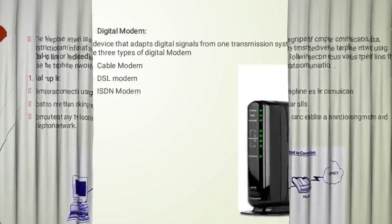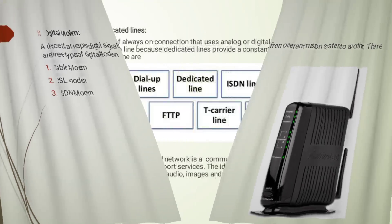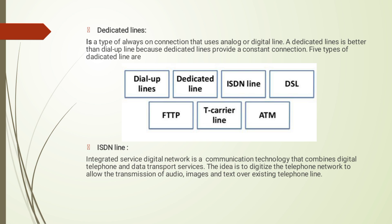A digital modem is a device that adapts a digital signal from one transmission system to another. There are three types of digital modem: cable modem, DSL modem, and ISDN modem. A dedicated line is a type of always-on connection that uses analog or digital lines. It is a permanent connection and can use both digital and analog lines. Dedicated lines are better than dial-up lines because they provide a constant connection between two computers. Dedicated lines are further divided into five types: ISDN line, DSL line, FTTP line, T-carrier line, and ATM.